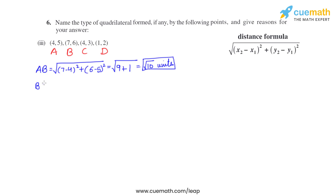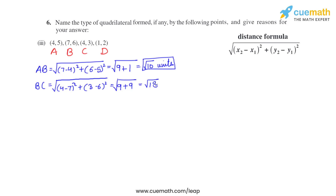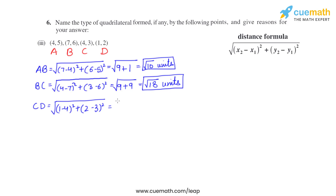For BC: (4 minus 7) whole square plus (3 minus 6) whole square = (−3)² + (−3)² = 9 + 9 = 18, so BC = √18 units. For CD: (1 minus 4) whole square plus (2 minus 3) whole square = (−3)² + (−1)² = 9 + 1 = 10, so CD = √10 units.